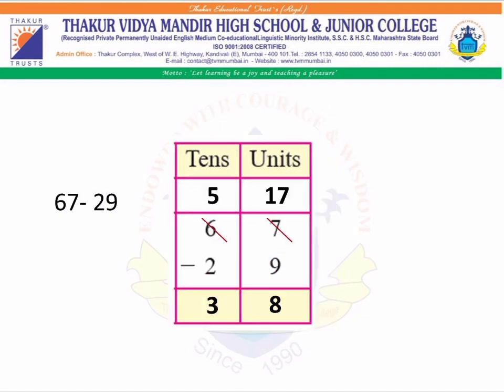Now children, let's do the second one: 67 minus 29. In the units column, we have 7 minus 9 — that is not possible. We borrow from the tans column: remove one tan, so it becomes five tans, and in the units column there will be 17 units. 17 minus 9 gives 8, and 5 minus 2 gives 3. So our answer is 38.